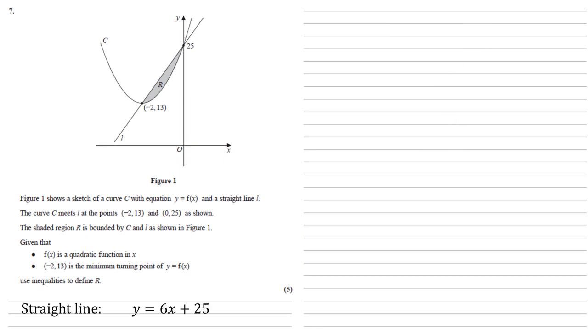We've got our equation for the straight line so now we need to find our equation for the curve. We're told that it's a quadratic so we know that it must be of the form y equals a lots of x plus b all squared plus c. Furthermore, we're told that the minimum turning point is at minus 2, 13. So for this to be a minimum we would need that bracketed part, the x plus b all squared, to be equal to 0. That's the smallest it can be. If x is minus 2, that means b would have to be 2 at this point. So we know that y equals a lots of x plus 2 all squared plus c.